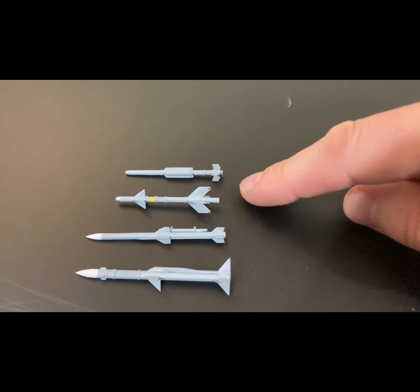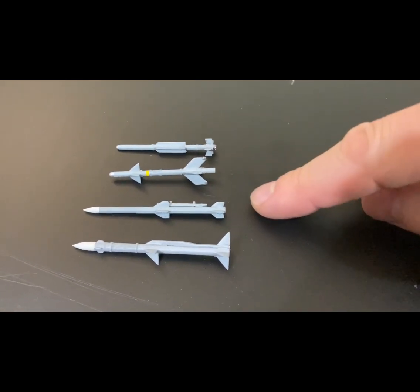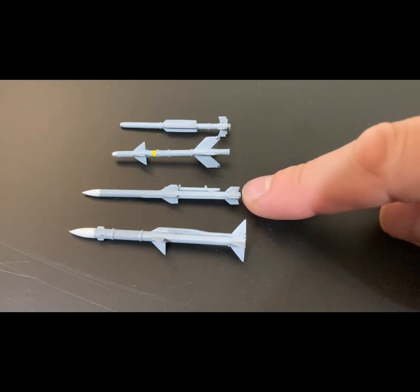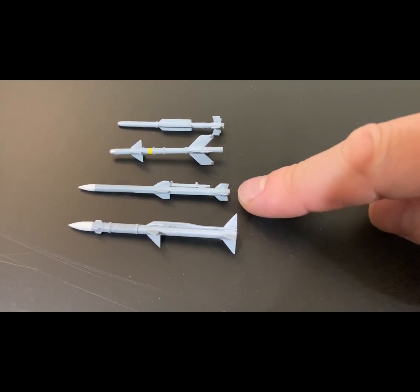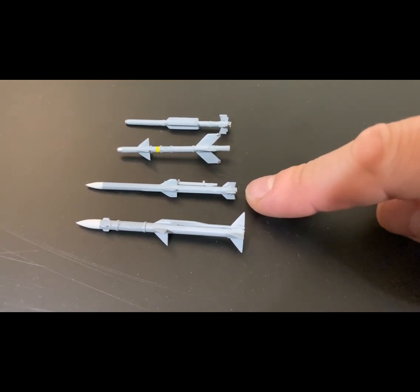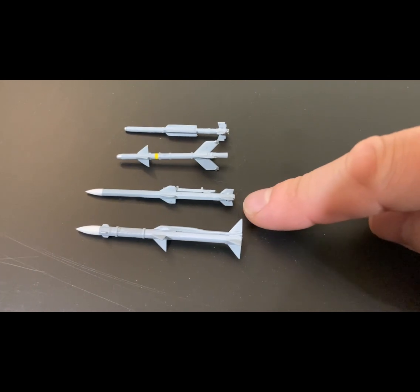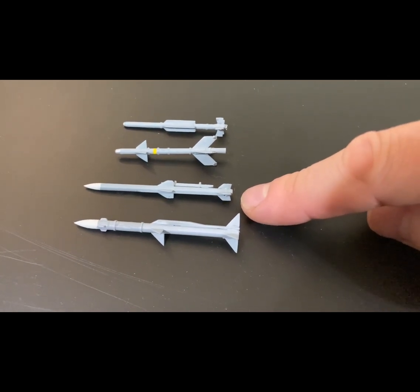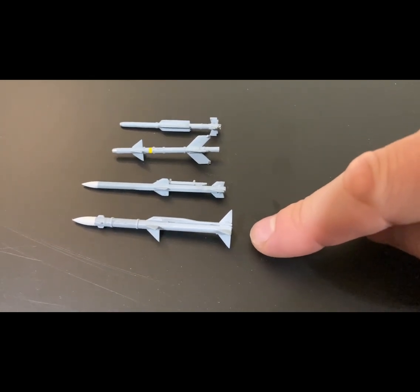Then we have the PL-15. This is a cropped tail version, and this is again used on stealth low-observable fighters. This is a medium-range missile.